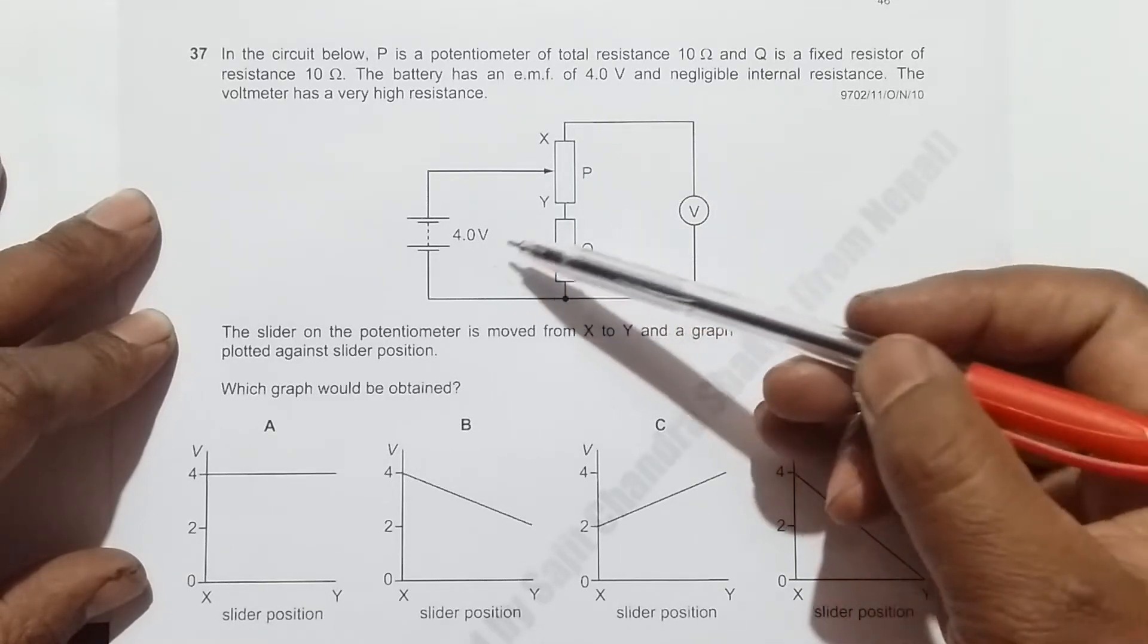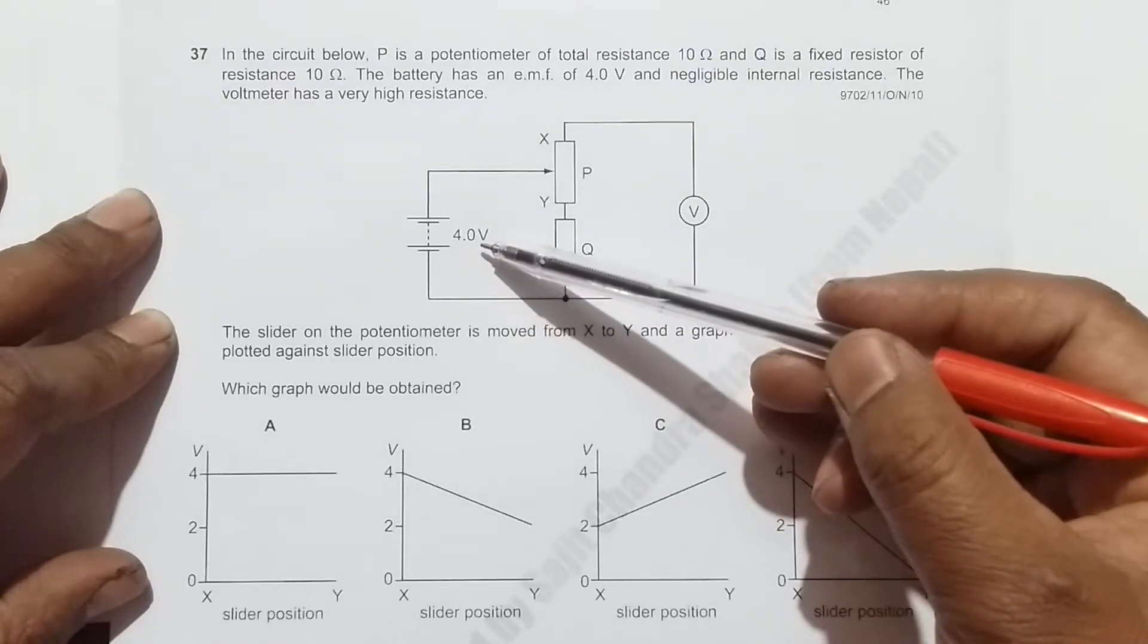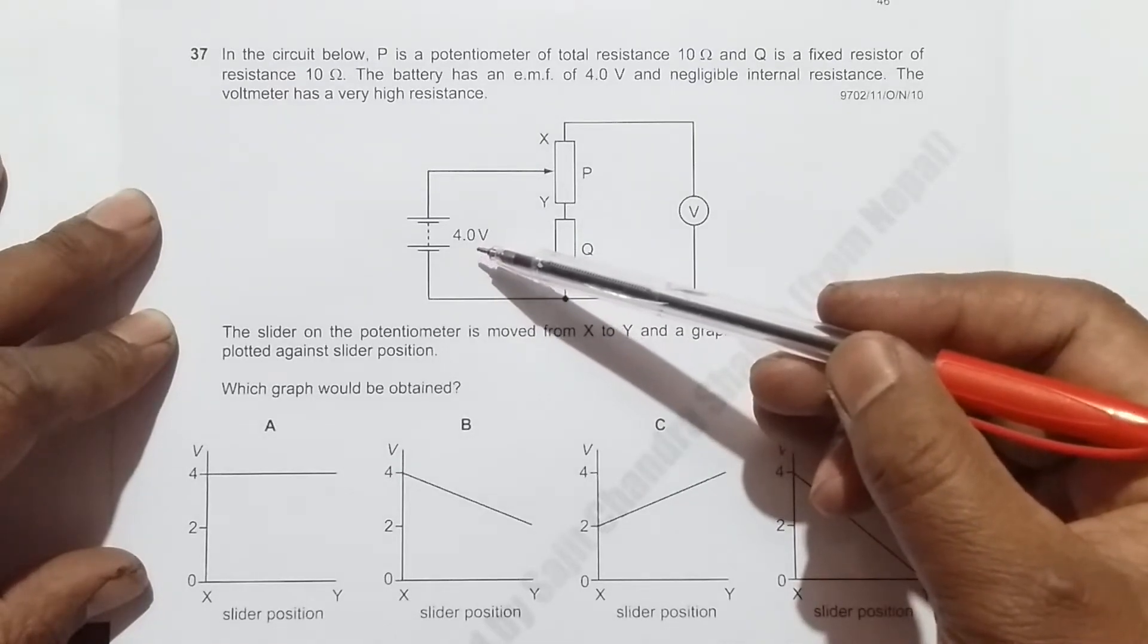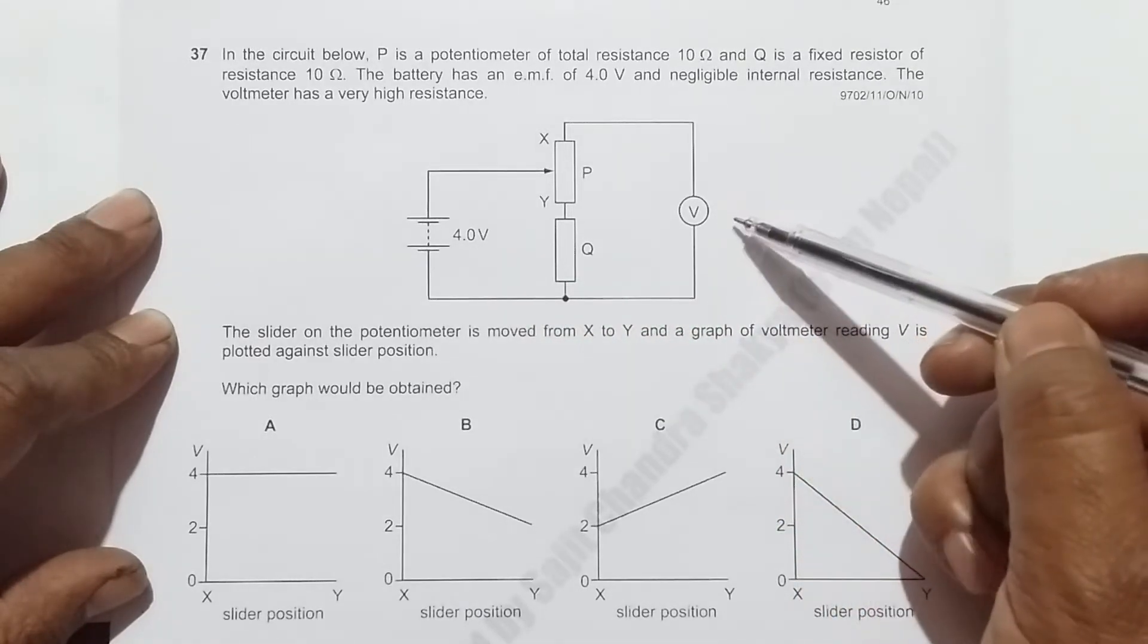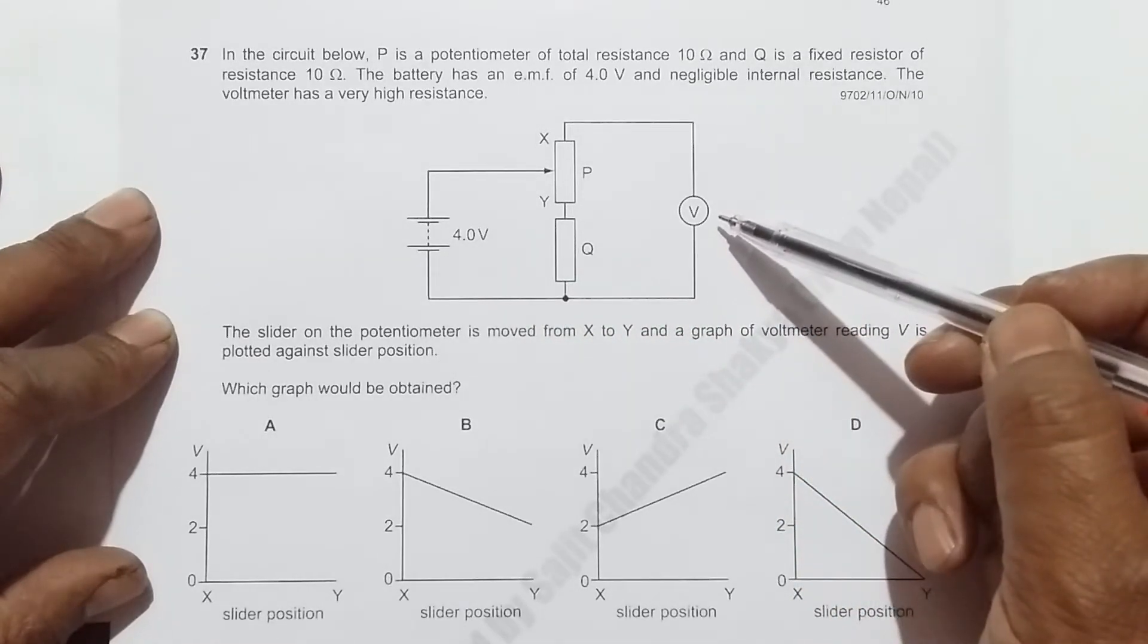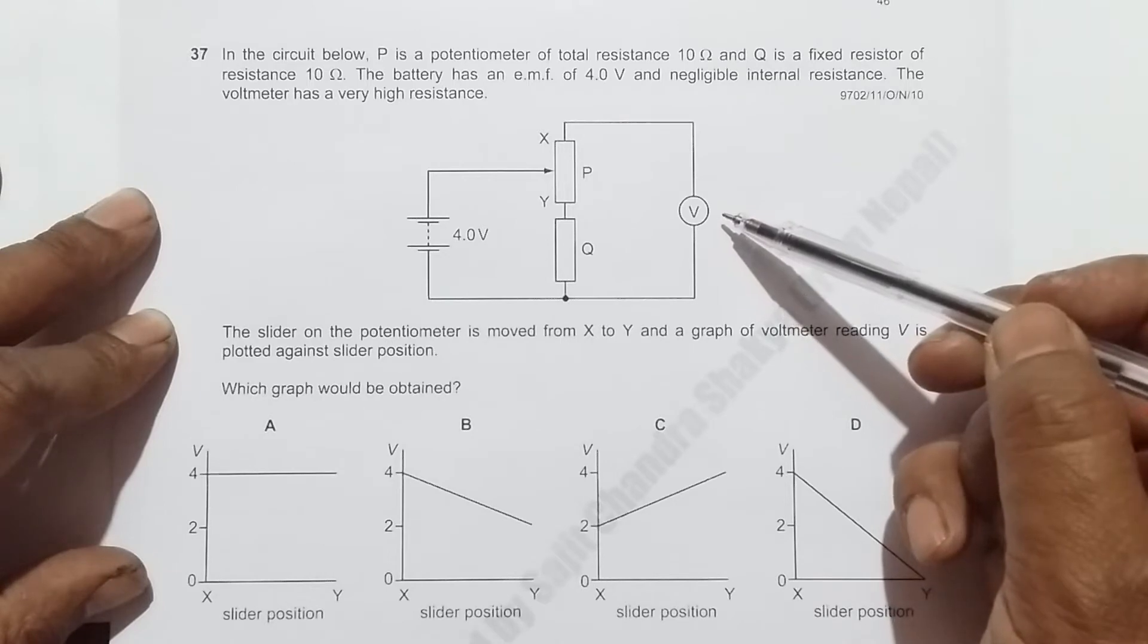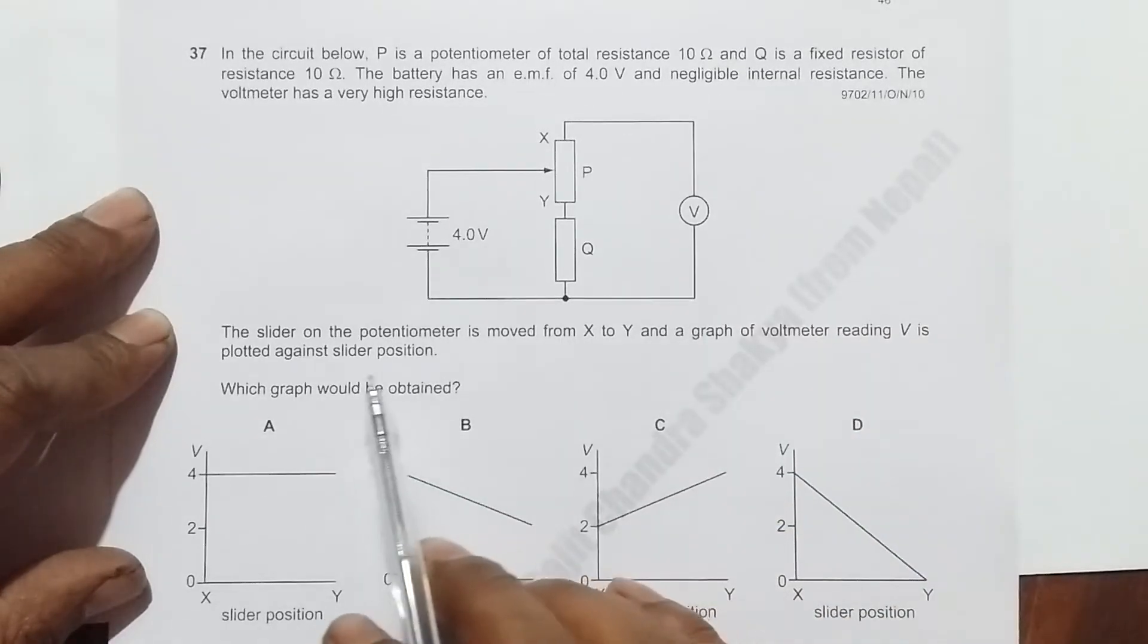The battery has an emf of 4 volts and negligible internal resistance, and the voltmeter has very high resistance, which is the requirement of every voltmeter.